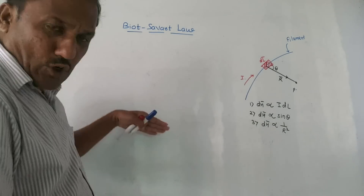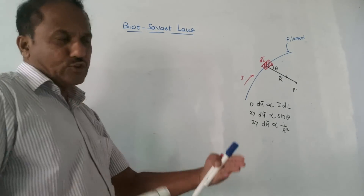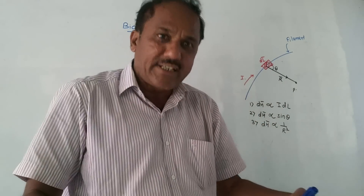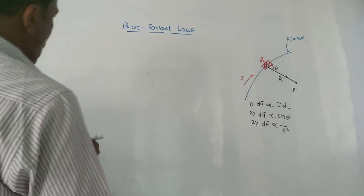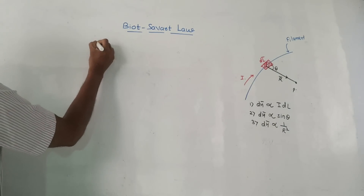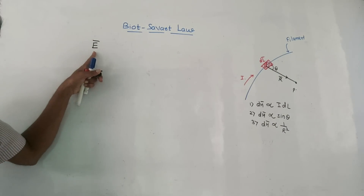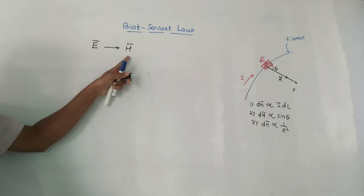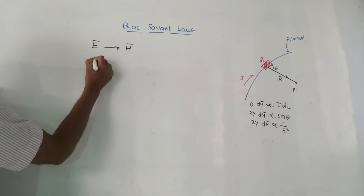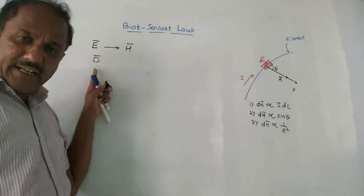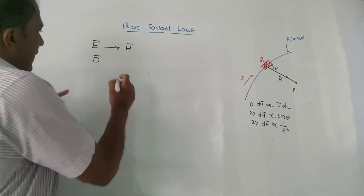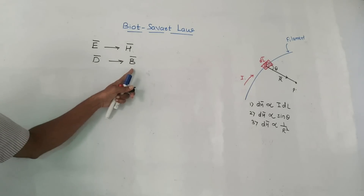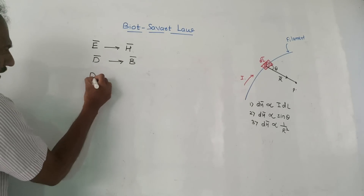I would like to make a list of notations which we have used in electrostatics and similar notations in magnetics. We have studied E bar, which stands for electric field intensity. The corresponding notation in magnetic field is H bar — H bar is magnetic field intensity. Then we have D bar, which is electric flux density, and the similar notation in magnetic field is B bar — B bar is magnetic flux density.